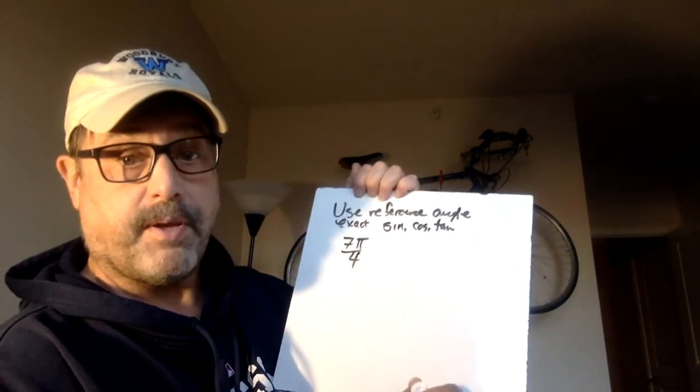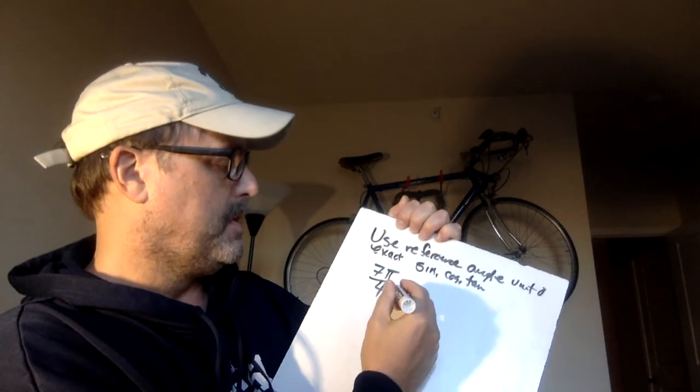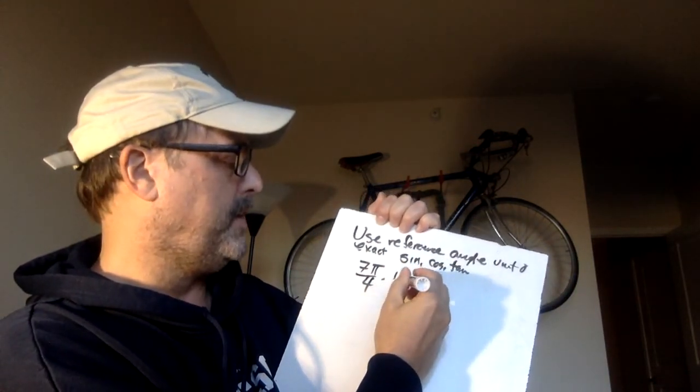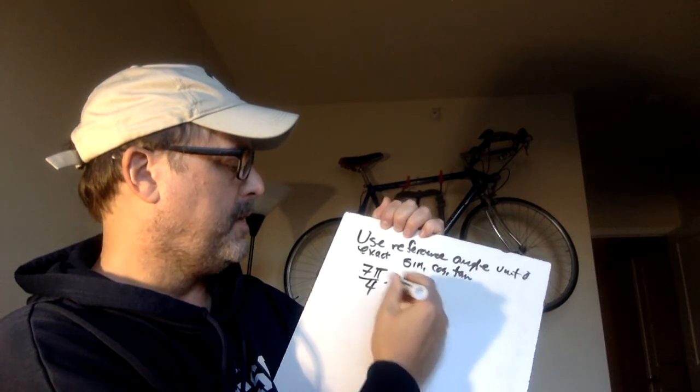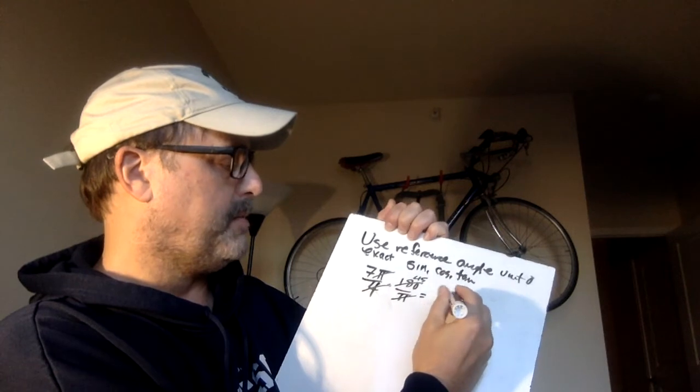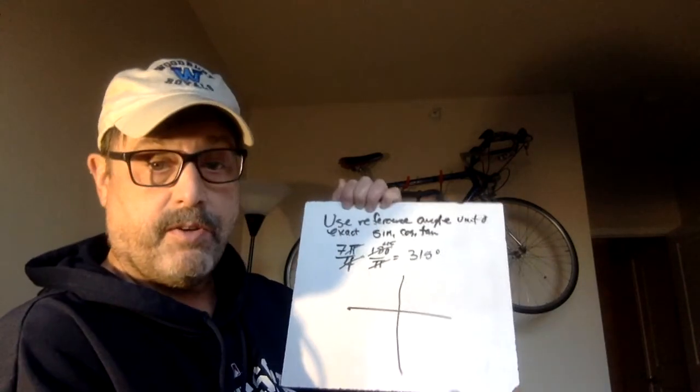Using the reference angle. It's the same thing. Reference angle and unit circle. So I'm going to have to convert this. I'm going to go 180 over pi. The pi's go. That goes 45 times. It becomes 315 degrees. Here you go. This is what you do today.